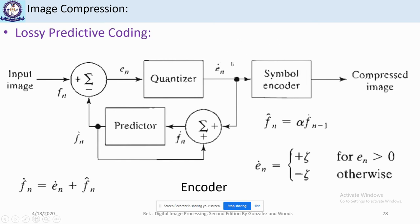Before storing the error, it is given to a symbol encoder which encodes it into variable length coding, reducing coding redundancy. That variable length code is stored into memory, and that is how we achieve compression and get the compressed image.